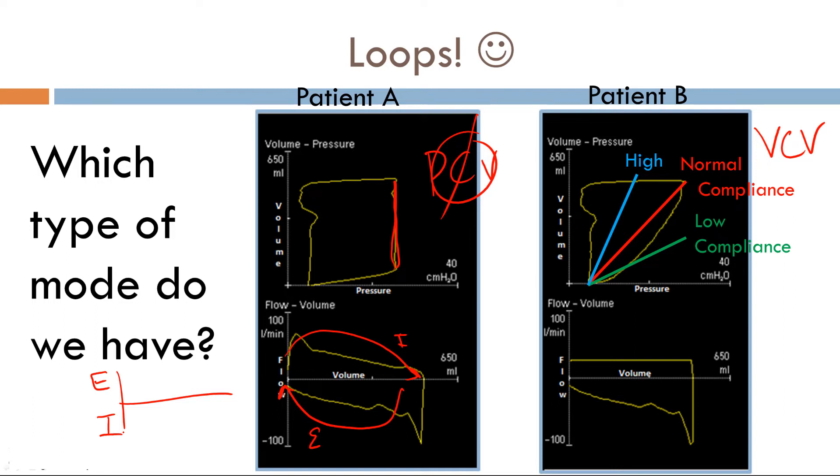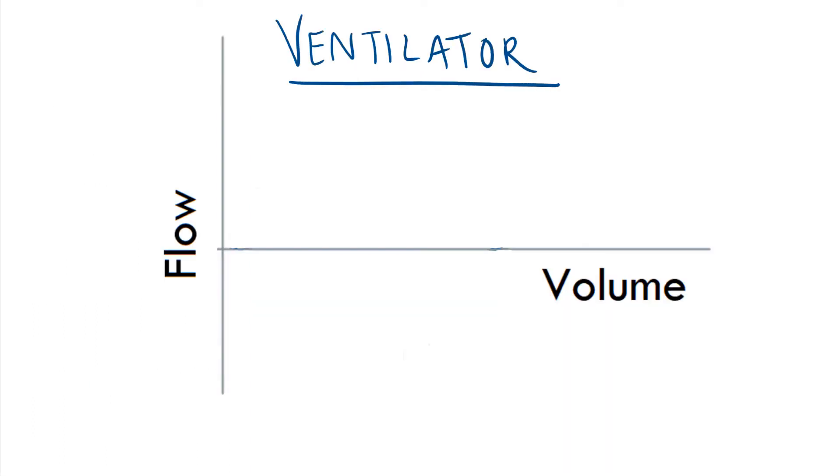This is a ventilator. We have inspiration on the top, expiration on the bottom. Here's a quick flow volume loop for a ventilator. If we rotated this 180 degrees, you would get what we know as spirometry or a PFT.